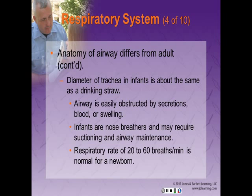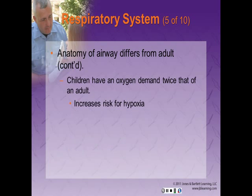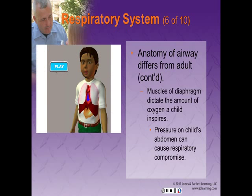Infants are nose breathers and may require suctioning and airway maintenance. A respiratory rate of 30-60 breaths per minute is normal for a newborn, and 12-20 is normal for a teenager. Children have an oxygen demand twice that of an adult. This higher demand, combined with a smaller oxygen reserve, increases their risk of hypoxia. The muscles of the diaphragm dictate the amount of oxygen the child inspires. Anything that places pressure on the abdomen of a young child can block the diaphragm and cause respiratory compromise. Use caution when applying spinal mobilization device straps as they may hinder tidal volume.